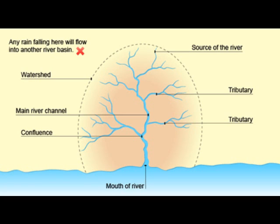Source: the point at which a river starts. Confluence: the point at which two rivers or streams join.